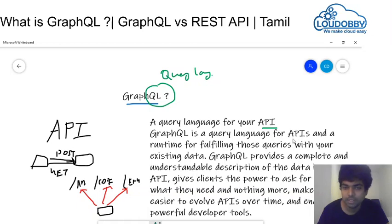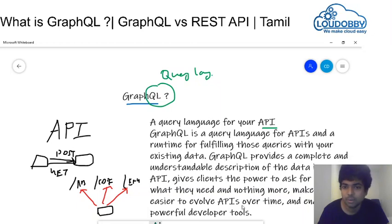GraphQL is a runtime for fulfilling those queries with your existing data. GraphQL provides a complete and understandable description of the data in your API. It gives clients the power to ask for exactly what they need and nothing more, makes it easier to evolve APIs over time, and enables powerful developer tooling.